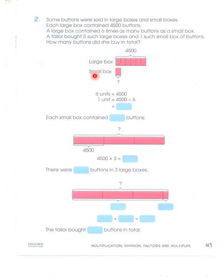The small box was 1/6 of 4,500, meaning 6 small boxes equal 1 large box. So if a large box had 4,500 buttons, then a small box has 4,500 divided by 6, which equals 750. Each small box contained 750 buttons.